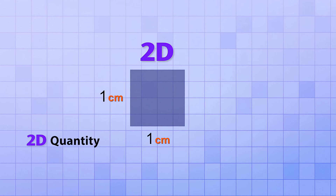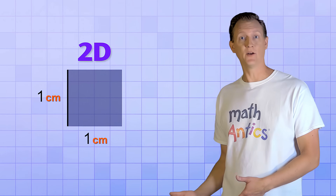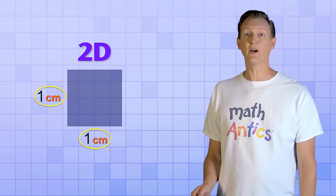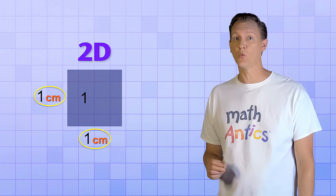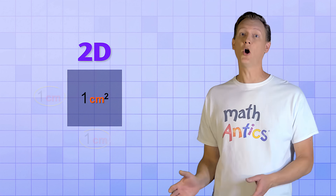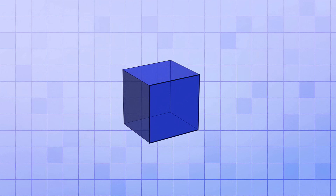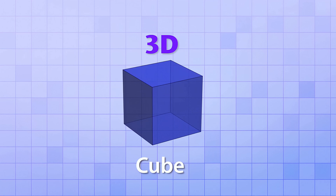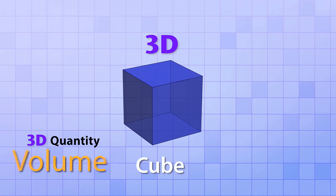Two-dimensional objects are measured by the two-dimensional quantity that we call area. Because the original line was one centimeter long and we extended it a distance of one centimeter, the amount of area this square occupies is one square centimeter, a common unit for measuring area. Now imagine we take that two-dimensional square and extend it in a direction perpendicular to its surface by a distance of one centimeter. It forms a three-dimensional object called a cube, and to measure it, we use a three-dimensional quantity called volume.